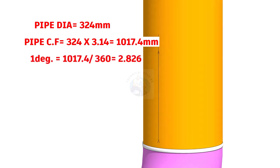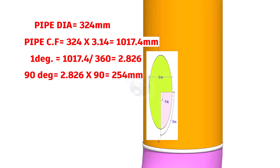1 degree equals 1017.4 divided by 360 equals 2.826. 90 degree equals 2.826 multiplied by 90 equals 254mm.